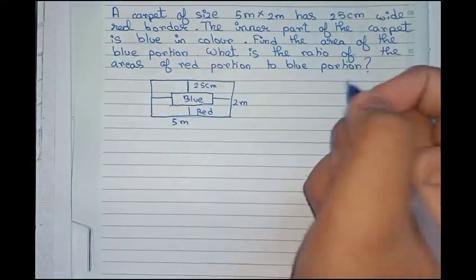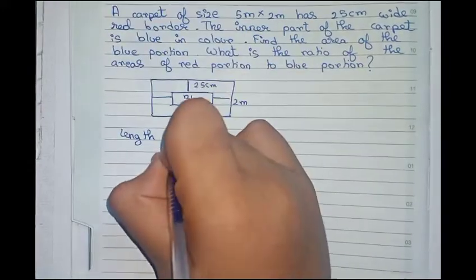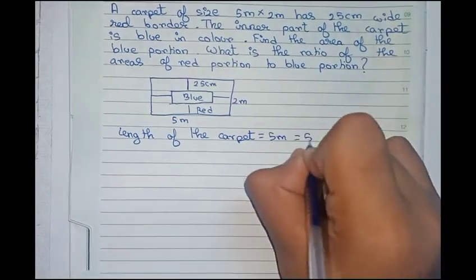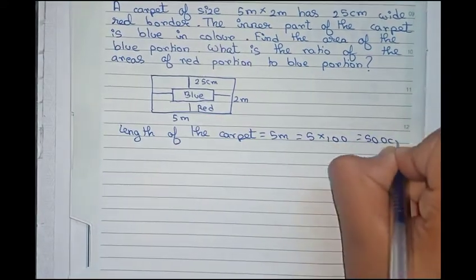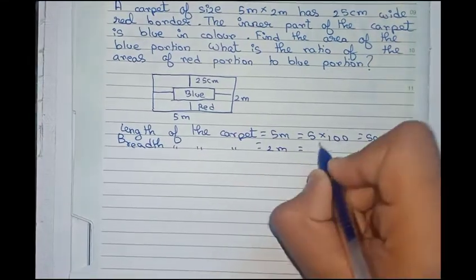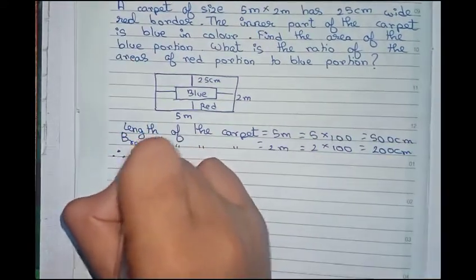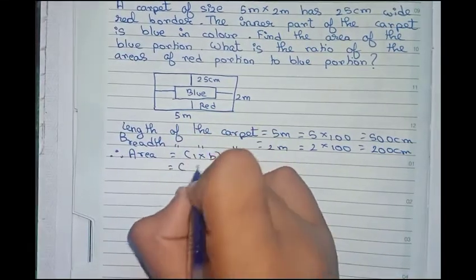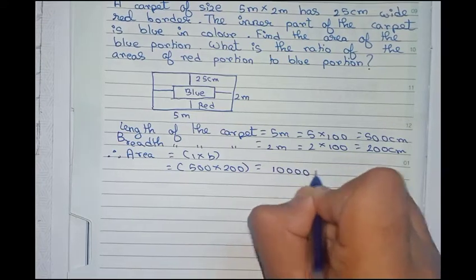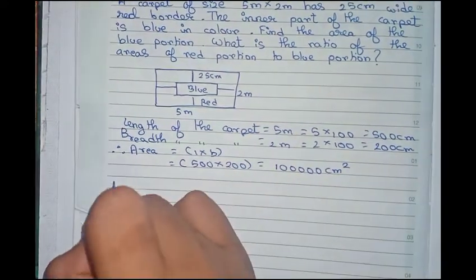Now first we find the area of the complete structure. The length of the carpet equals 5 meter, which we convert to 500 centimeters. The breadth of the carpet equals 2 meter, which is 200 centimeters. Therefore, area equals length into breadth equals 500 into 200, that is 1,00,00,000 — wait, that is 1,00,000 centimeter square.